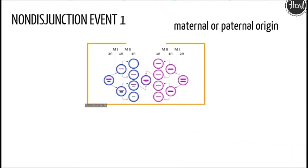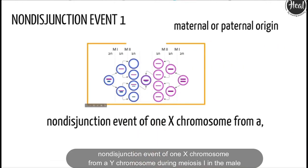birth of a cell with karyotype XXY due to a nondisjunction event of one X chromosome from a Y chromosome during meiosis 1 in a male.